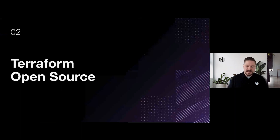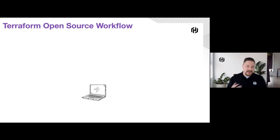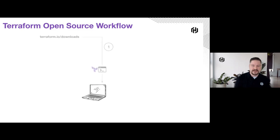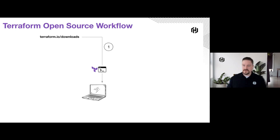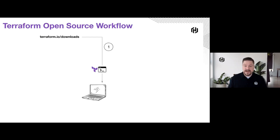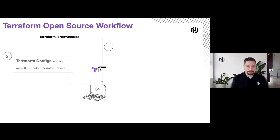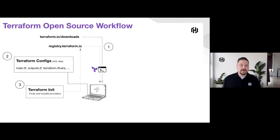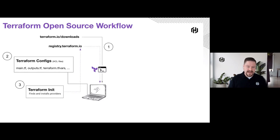Let's take a look at open source and see what that workflow looks like. With Terraform open source, we start with a single machine — generally your laptop or desktop — and download Terraform, which is just a binary you run from that machine. We'll create some configs, define what our infrastructure is, and then run a Terraform init. Terraform init looks at our code and figures out what we need, like the AWS provider, and downloads those onto the laptop so it can compile and connect.